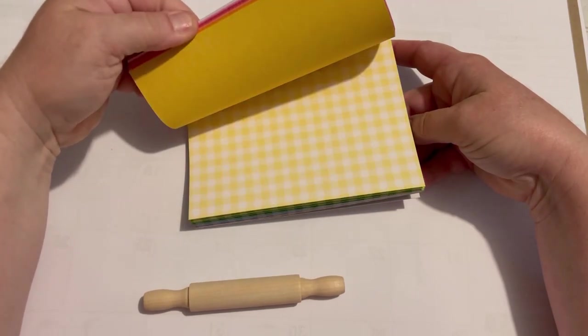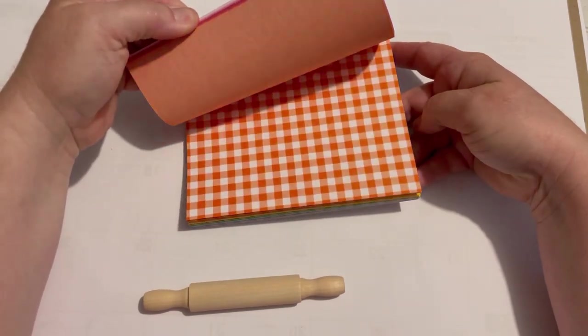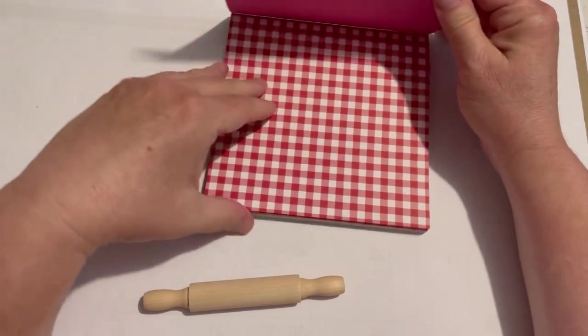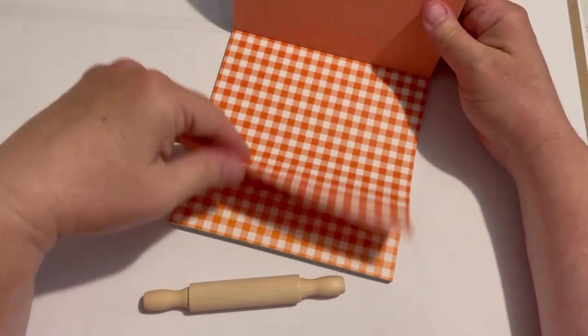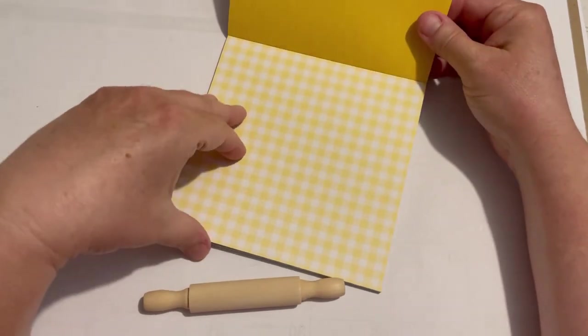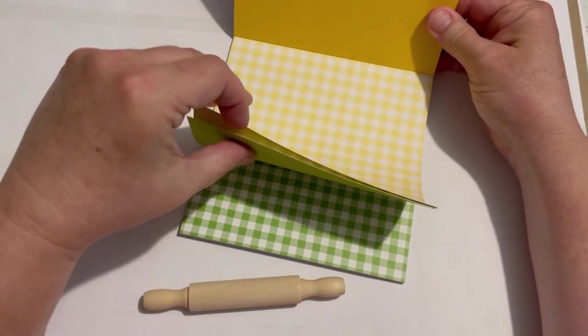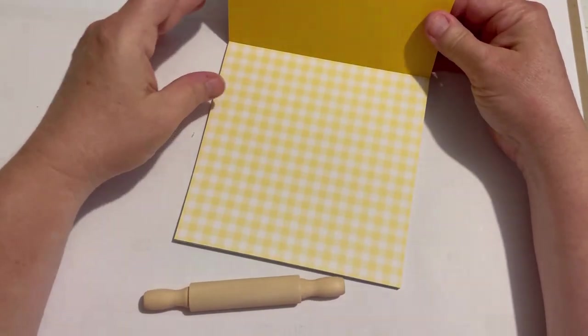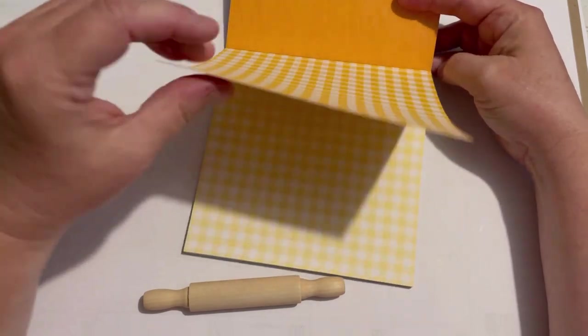Check out my paper packs. I've got a bunch of them on Etsy if you'd like to get some gingham or buffalo check. This is from Doodlebug and it's a very nice pack. One side is the gingham and the other side is wood texture or like a wood look.